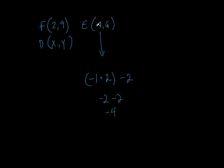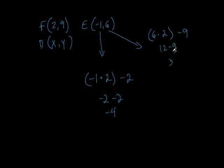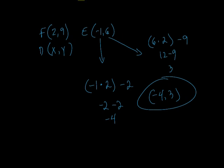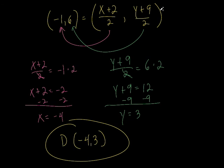Then we do the same thing with the Y. Take that midpoint, multiply it by 2, and then take away the 9. So 12 minus 9 is 3. You could do it that way as well. So the endpoint is (-4, 3). It's less work, but it's really doing the same exact thing — just a little bit less writing. You've got to remember: take the midpoint, multiply it by 2, then subtract the other endpoint from it.